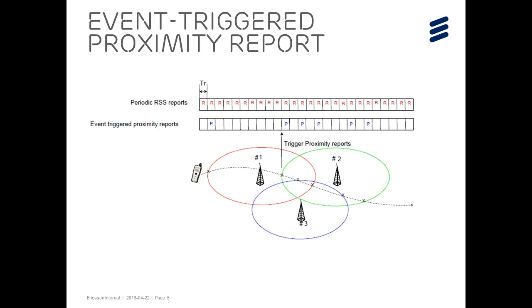As compared to the conventional received signal strength measurements, proximity is beneficial in various aspects. Unlike the periodic RSS reports where a mobile device sends the measured RSS values to the network regularly, a proximity report will be triggered only when the proximity status changes. For example, the mobile device crosses the border when the RSS passes the threshold, as shown by the cross marker in the figure on this slide.